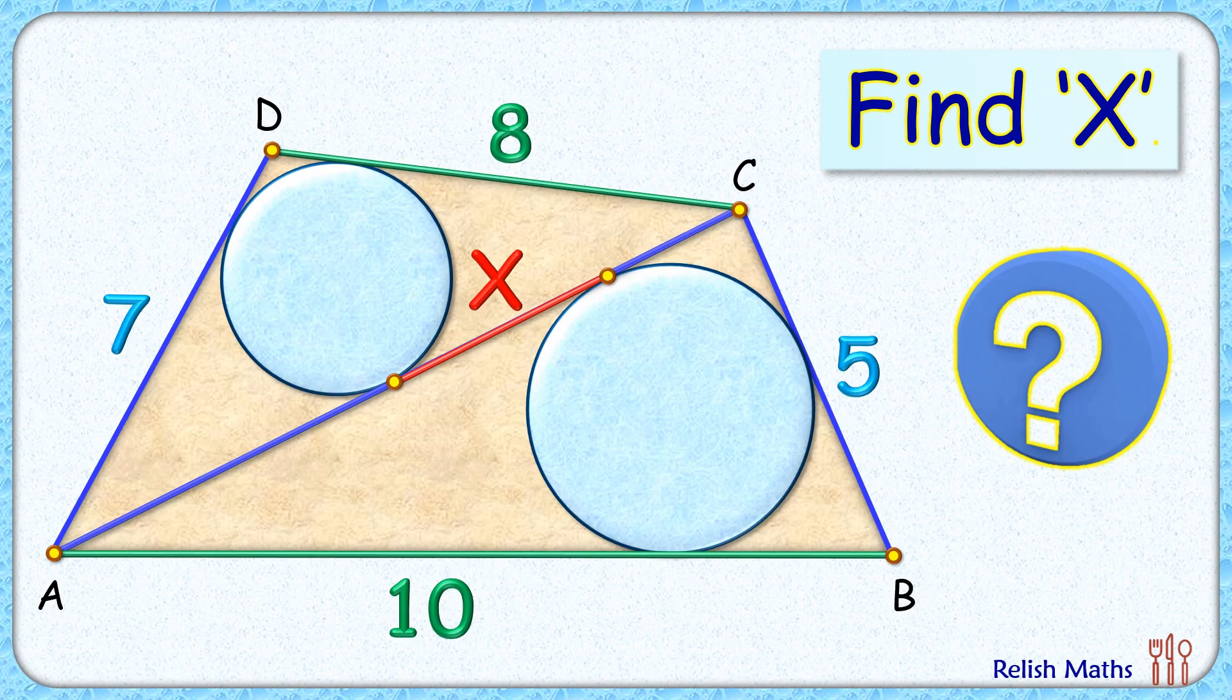In this interesting question, quadrilateral ABCD sidelines are given, AC diagonal is drawn, and in these two triangles formed, two incircles are drawn. With this limited data, we have to find the length of this common tangent between these two circles formed.